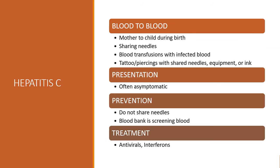Hepatitis C is often asymptomatic until significant liver damage has occurred. The person may experience a mild prodromal phase. They do not have an icteric phase — they just have a very long incubation period with mild symptoms, and then this very slow, insidious disease as it attacks the body.